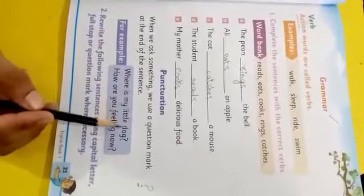Now read question two: Rewrite the following sentences using capital letters, full stop, and question mark where necessary. In this answer, you need to look at the sentences given. You need to add capital letters at the first word, add full stop or question mark at the end. So, move on to page number 24.